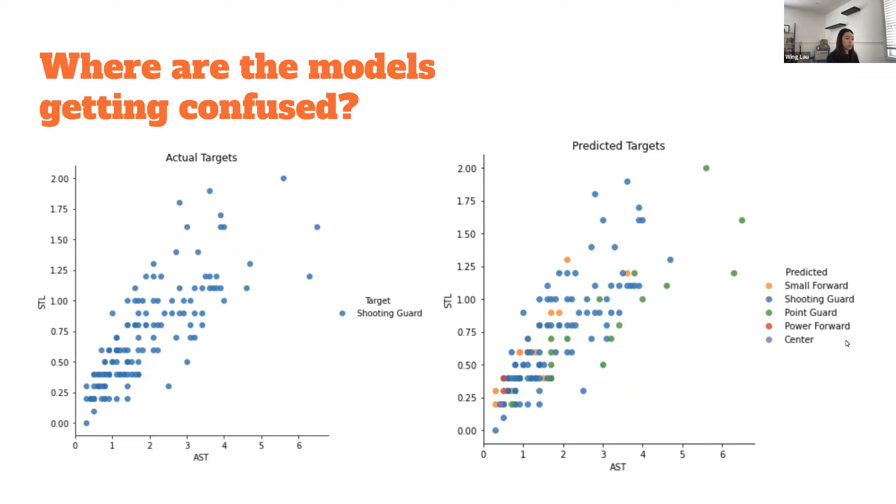Another quick example is shooting guards. It's really getting confused with the other small players, and the only time we ever guess it being a bigger player is when steals and assists are low.